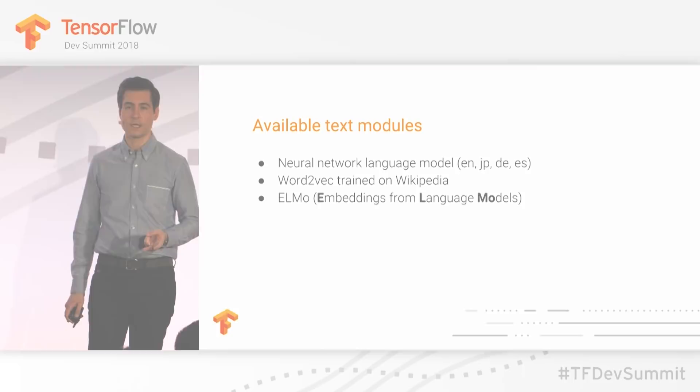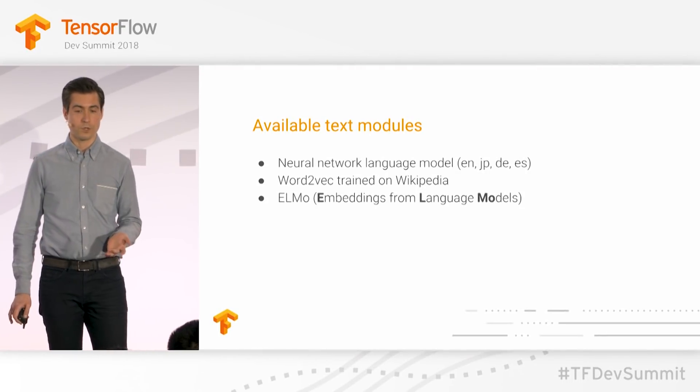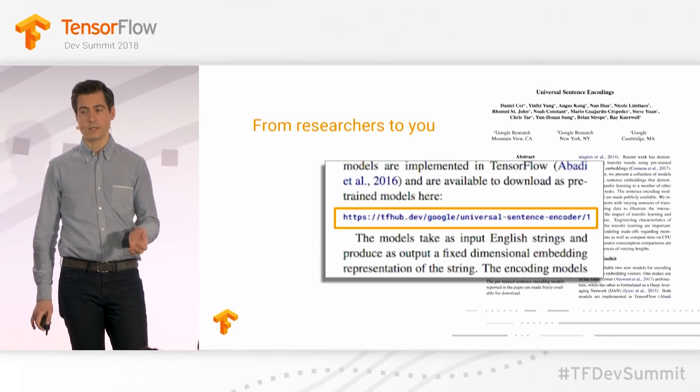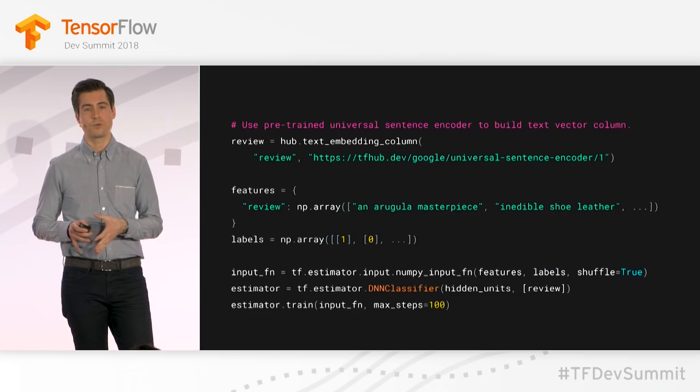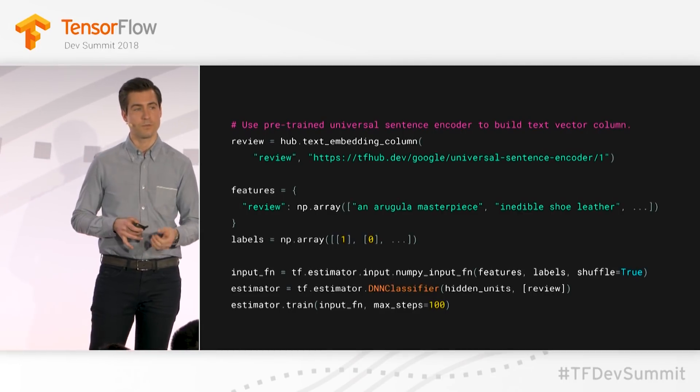The classic transfer learning case is to take an image classification module just up to the feature vectors and retrain your own classification on top. But you can also go deeper — you can retrain text embedding modules. With TF Hub, you can do fine-tuning and retraining inside the module itself. If you have enough data, you can turn on retraining inside the module, because it's just a graph with weights, so you can get better results since it's not static.